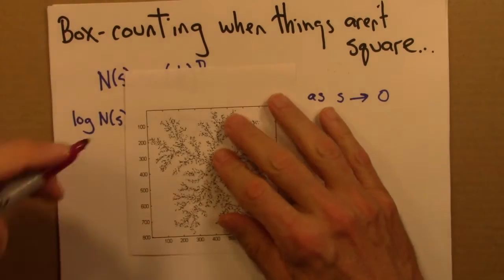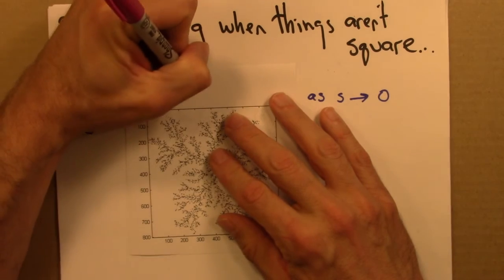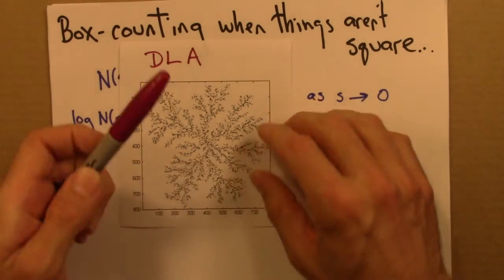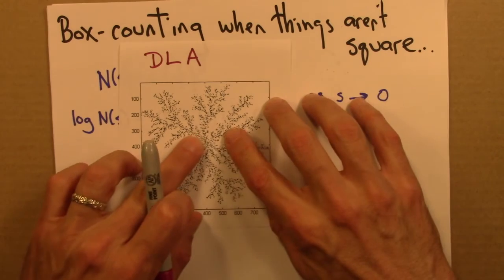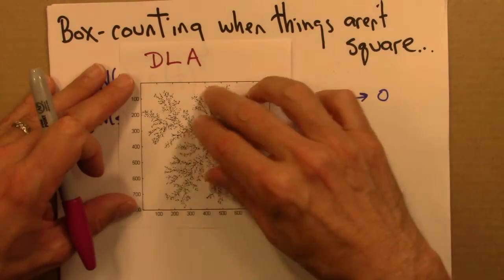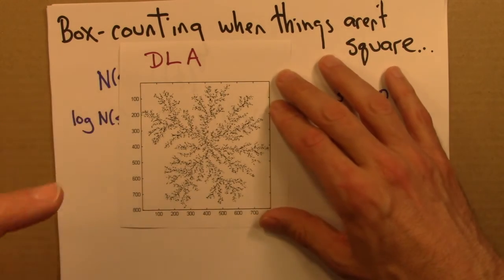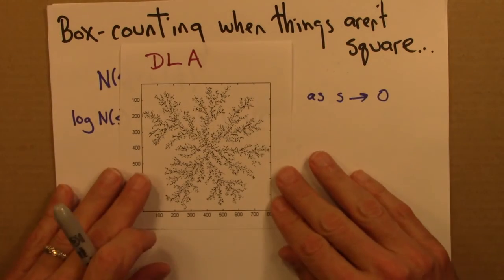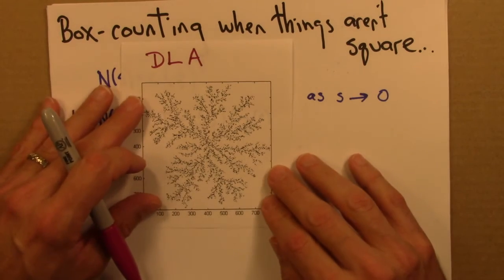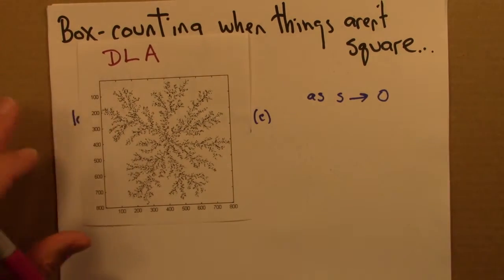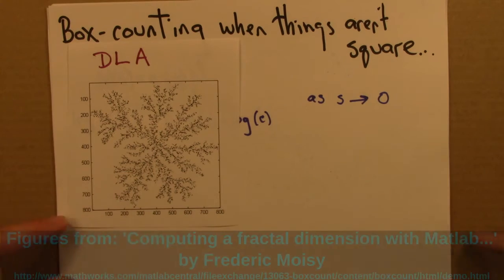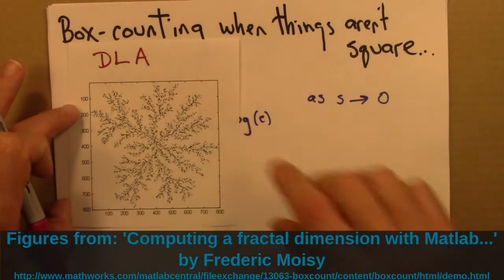So diffusion limited aggregation. So here's a DLA cluster. Something that's grown around a seed here and the particles do random walks and when they hit the middle or the cluster they stick. So we've seen before in the previous unit, these make these attractive dendritic patterns. So what if we wanted to calculate the dimension of this? And I should mention this isn't my own work. This is work from a MATLAB demonstration. I'll put the full citation down here.